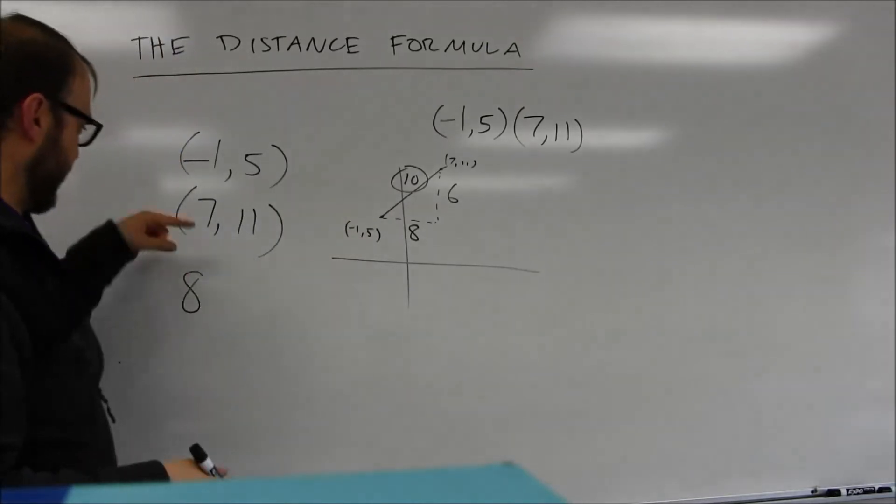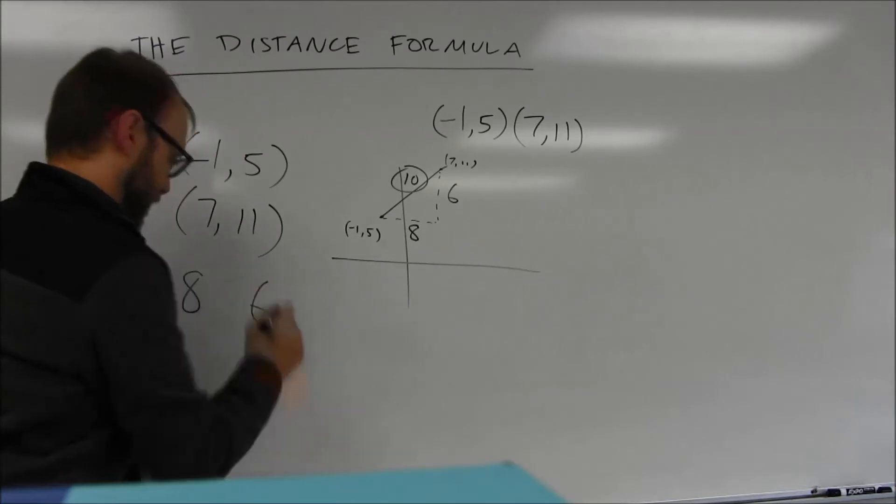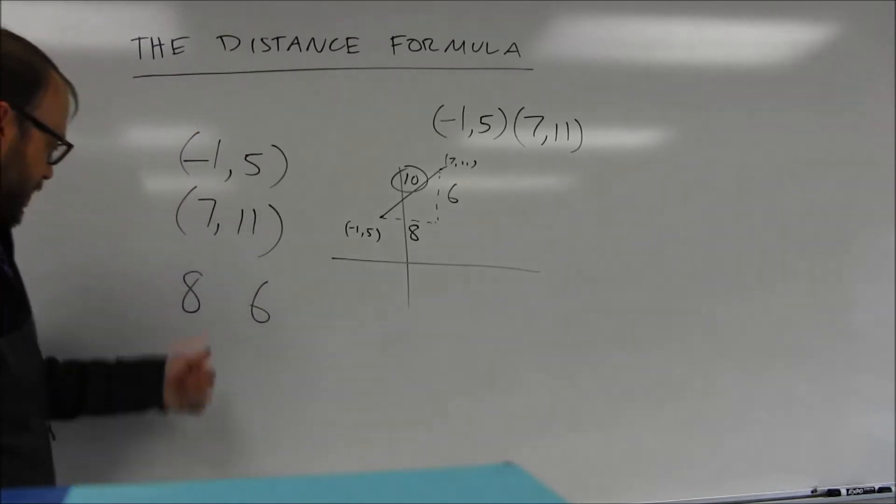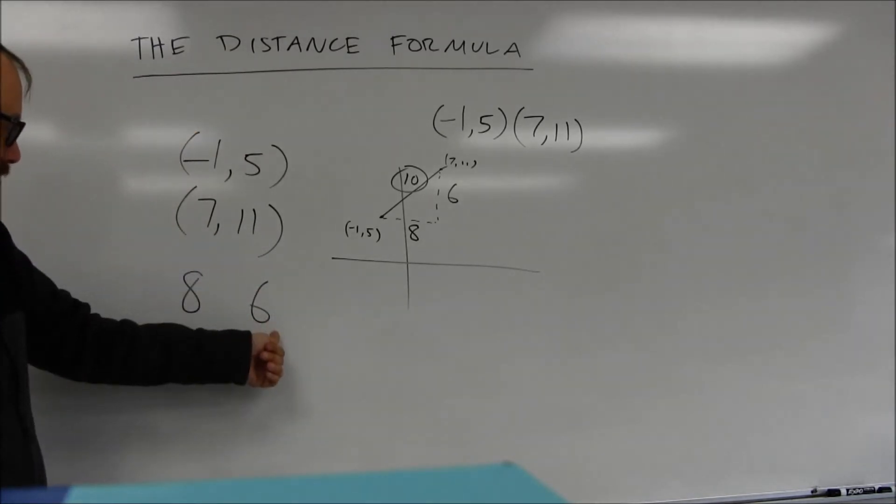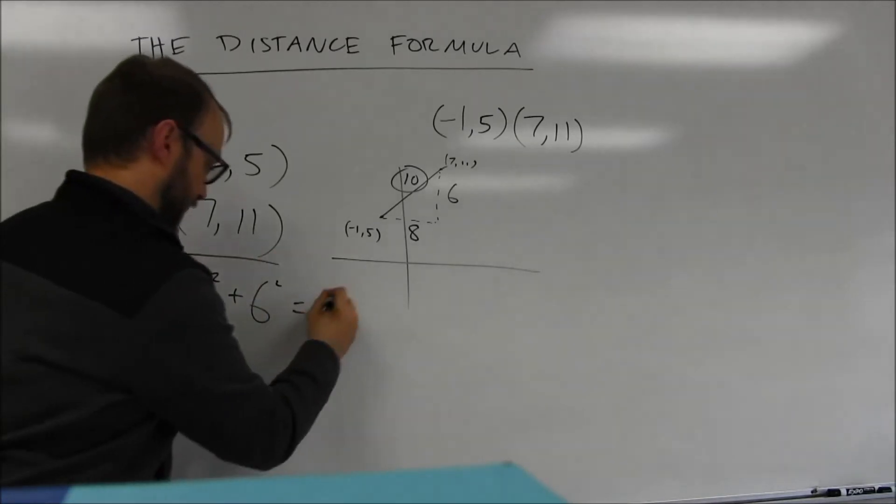How far apart are 5 and 11? They're 6 apart. There's my horizontal side, there's my vertical side. Square them, add them together, take the square root, end up getting 10.